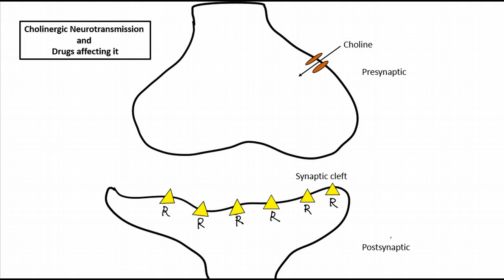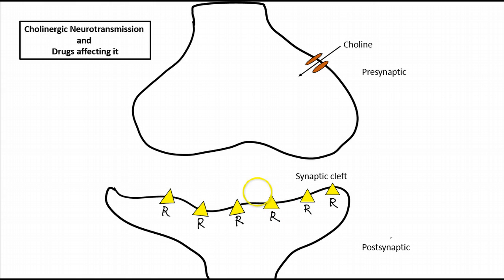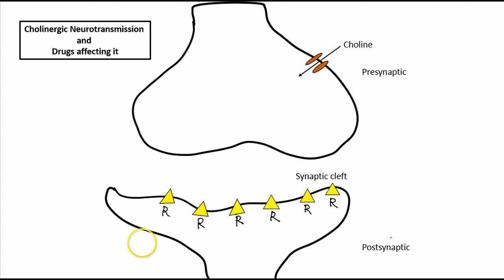This diagram shows an example of a cholinergic neuroterminal. This is the presynaptic area, this is the postsynaptic area, and this is the synaptic cleft. The postsynaptic area has cholinergic receptors, which can be muscarinic receptors or nicotinic receptors.